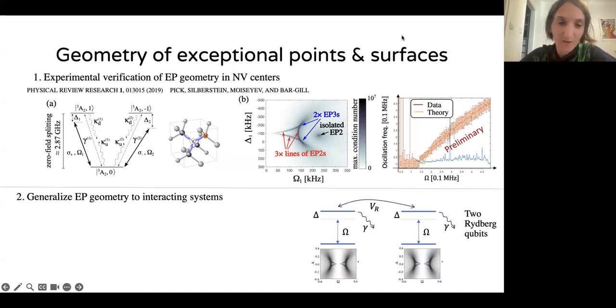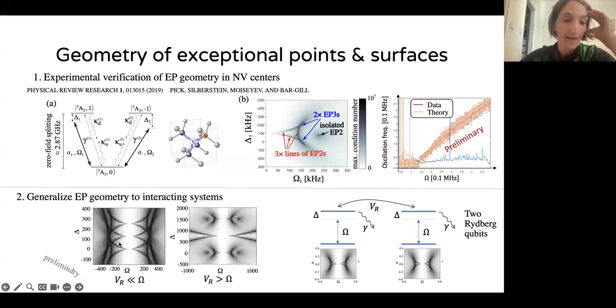We're also working on generalizing these results. We would like to classify in general, what are the geometries of EP lines that we will get in multi-level, multi-qubit systems? Here you see an example of two interacting Rydberg qubits. Rydberg qubits are again two-level systems that have a low energy state and a very highly excited energy state that is associated with a very large dipole moment. Two Rydberg atoms interact much more strongly in the excited state than in the ground state. When these atoms are placed far apart, each one of them has this bowtie shape of degeneracies. But now when they interact, when the interaction is weak, we get the bowtie tripled. And as the interaction strength between the Rydberg qubits exceeds the Rabi drive, we start seeing these exceptional lines, these exceptional points. This is work in progress.